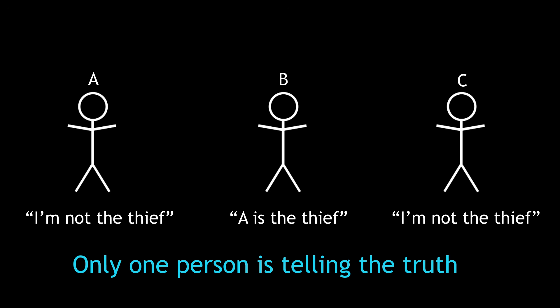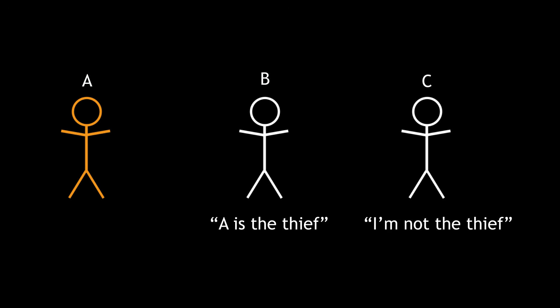Well, the answer is yes, and it's quite easy. Suppose A was the thief, then B would be telling the truth, but so would C. So two people appear to be telling the truth when we know that there should only be one. So A can't be the thief.